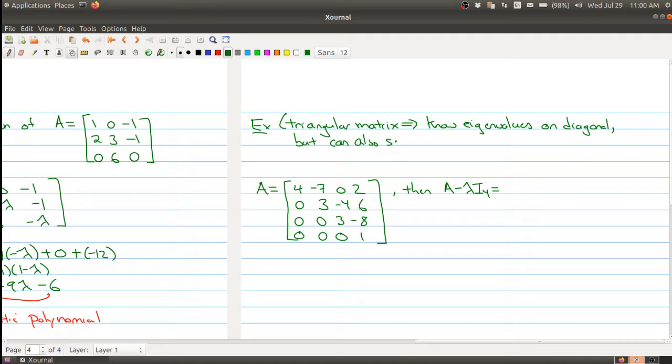And let me quickly sketch out an example so you can see that. So here I have a 4 by 4 matrix, and I set up the matrix A minus lambda I 4. So I get 4 minus lambda, negative 7, 0, 2, 0, 3 minus lambda,